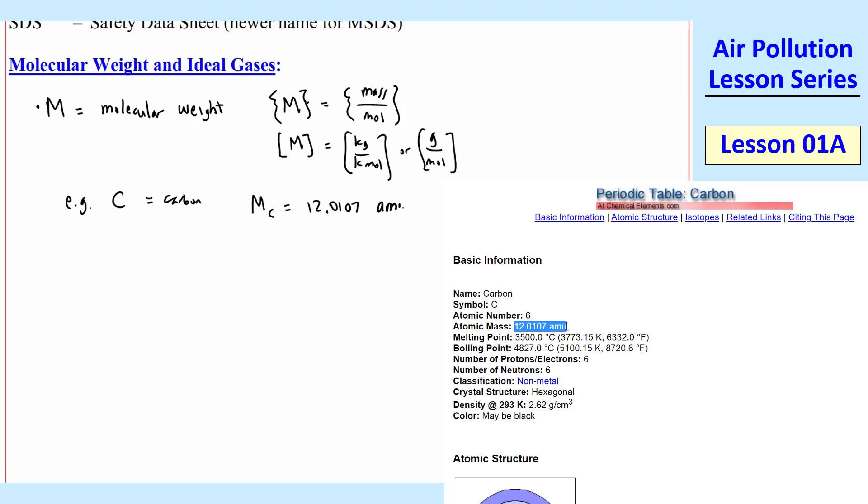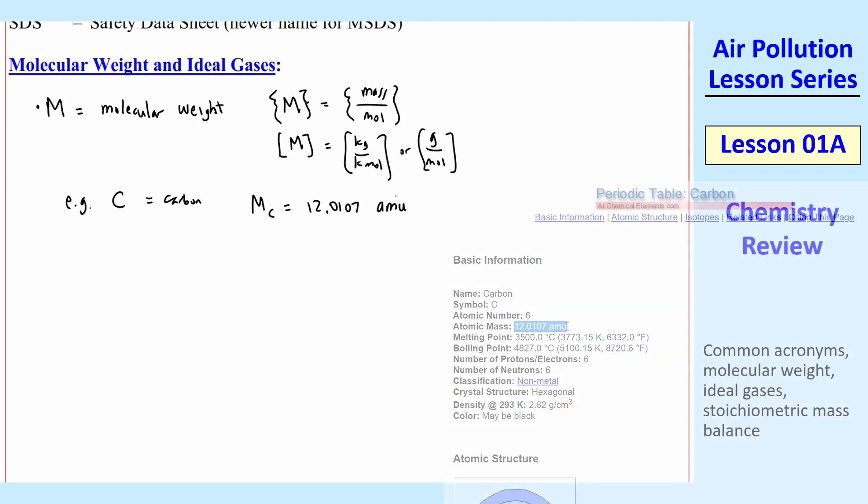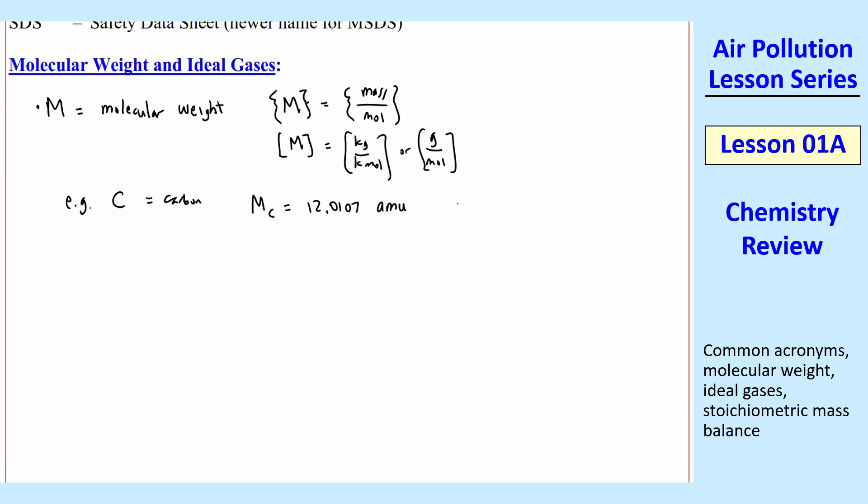Sometimes people call this AMU, atomic mass units, but that is the same as 12.0107 grams per mole. So we're going to always use grams per mole as our molecular weight instead of AMU, which is kind of a strange unit.